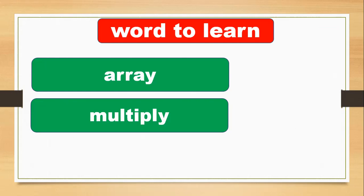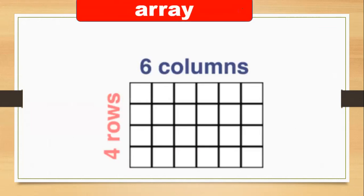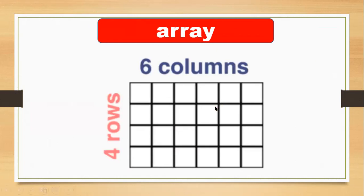In this lesson you have to learn the words 'array' and 'multiply' — memorize and learn these words. First of all, this is an array. Can you see this picture? In an array you have rows and columns. As you can see, this picture has four rows and six columns. Look at the boxes — count the rows: one, two, three, four — you have four rows.